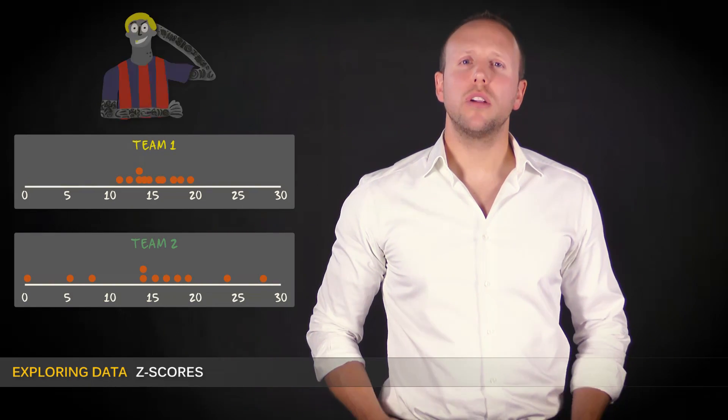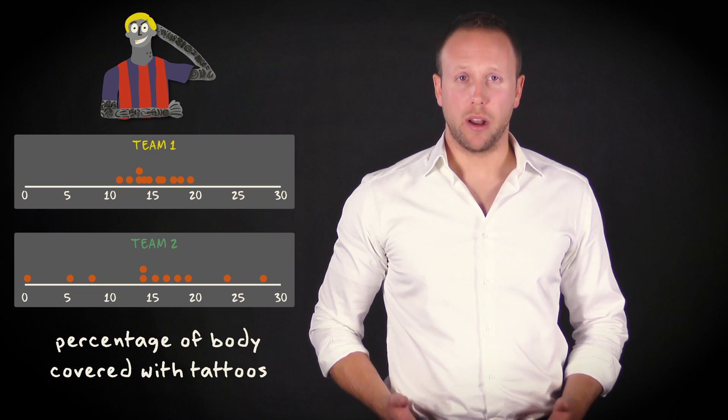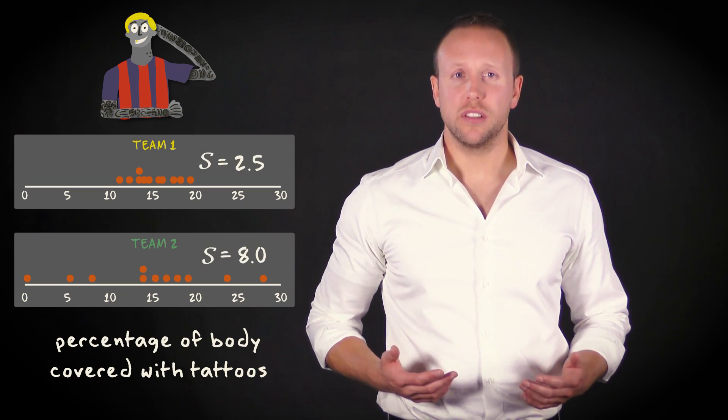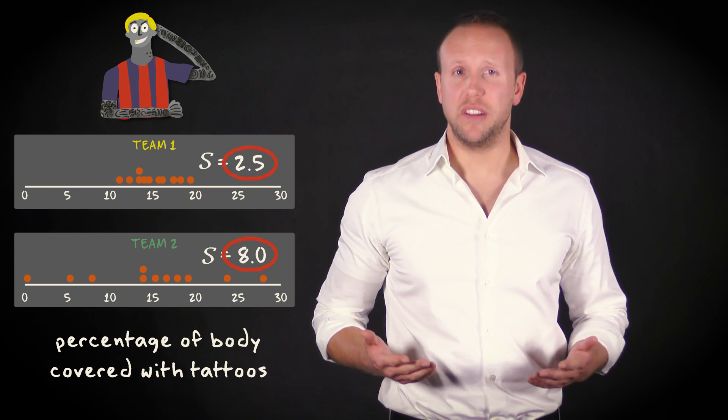What you see here is the so-called tattoo density of football players, expressed in the percentage of the body covered with tattoos. The dot plots and standard deviations show that there is much more variability in the distribution of team 2 than in the distribution of team 1.